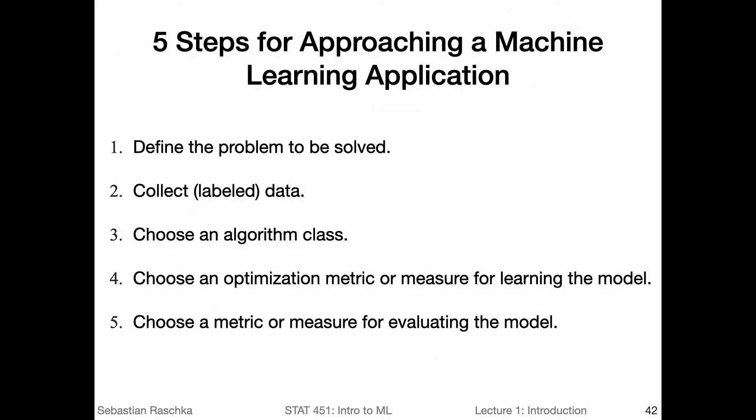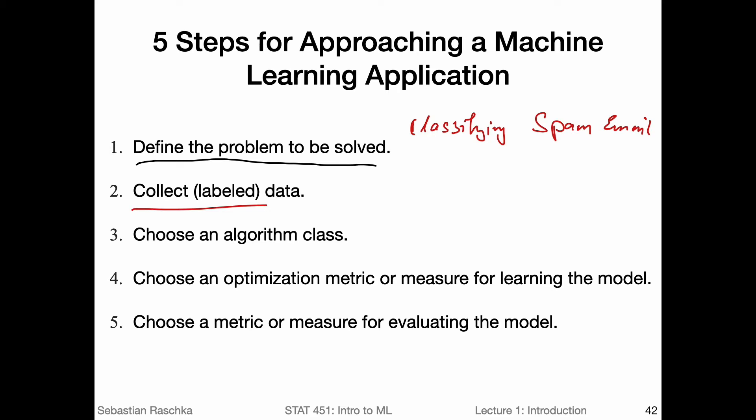In practice, when we develop a machine learning application, there are usually many steps involved, and I tried to condense it to five major steps. First of all, when we start working on a machine learning application or problem, we have to define the problem that we want to solve. Taking the previous example again of email classification, the task would be classifying or filtering spam email. Then we would have to collect a labeled data set — in this case, we would collect a body of emails like 10,000 or 50,000 emails, and also have the labels whether the emails are spam or not spam.